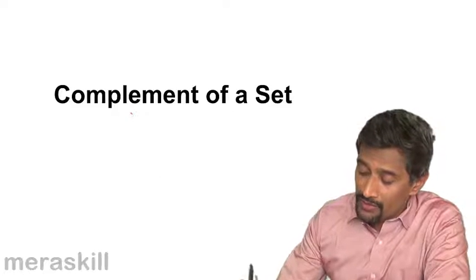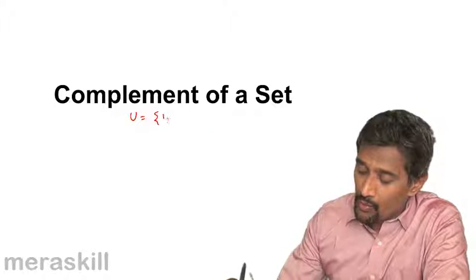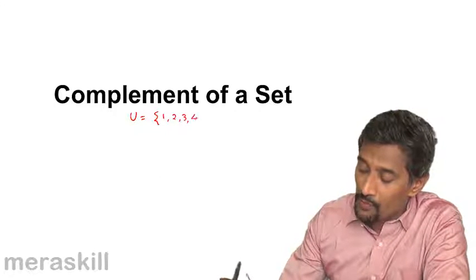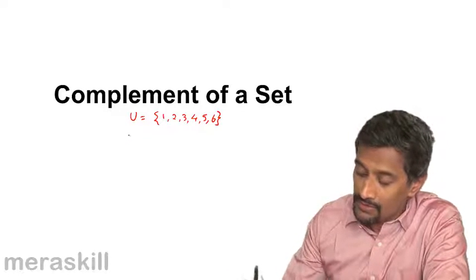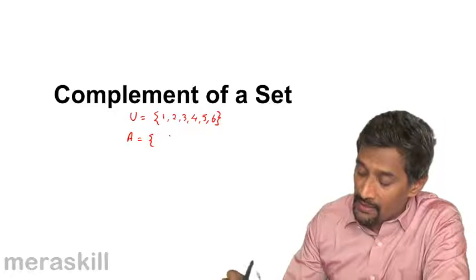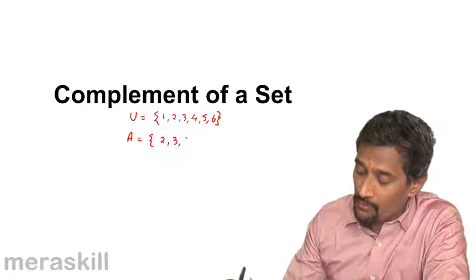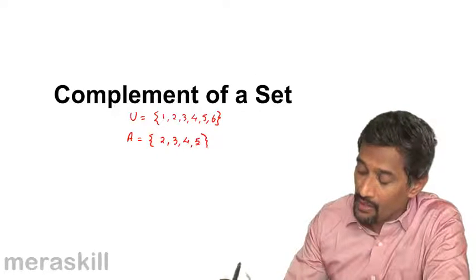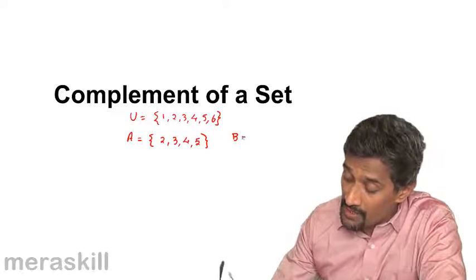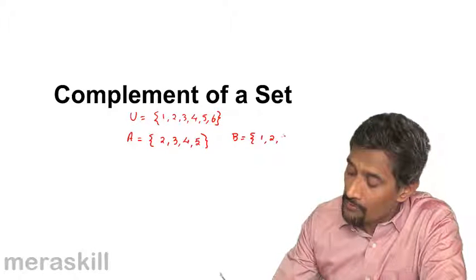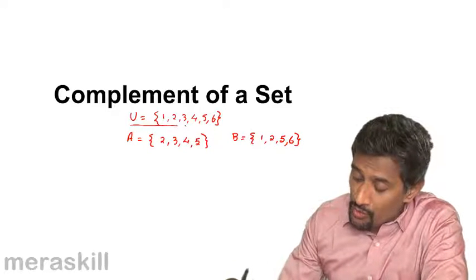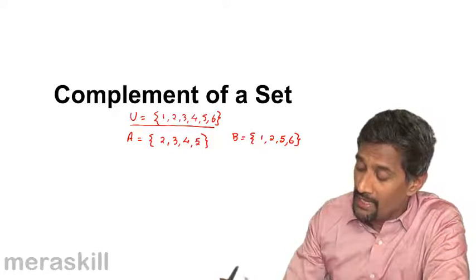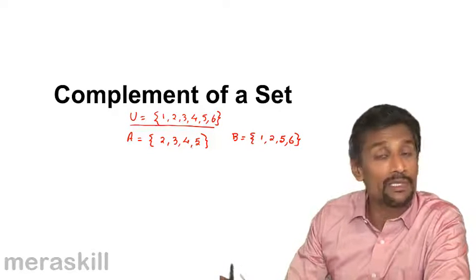Suppose you have universal set as 1, 2, 3, 4, 5, 6, etc. This is the universal set and A is 2, 3, 4, 5 and suppose you have B is say 1, 2, 5, 6. So if you see U, A and B both of them are proper subsets of U.